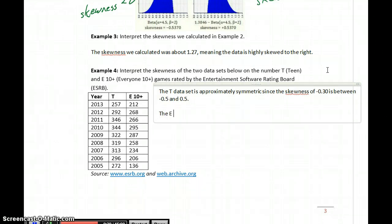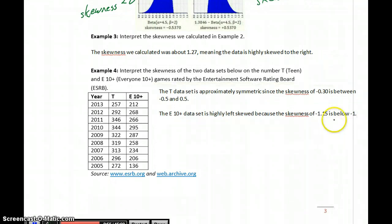The E 10 plus data set is highly left skewed because the skewness of negative 1.15 is below negative 1. So, since our skewness is below negative 1, that means it's highly skewed, and since that's a negative, it means it's highly left skewed. So those are the interpretations that we can provide to those numbers, what those results actually tell us.